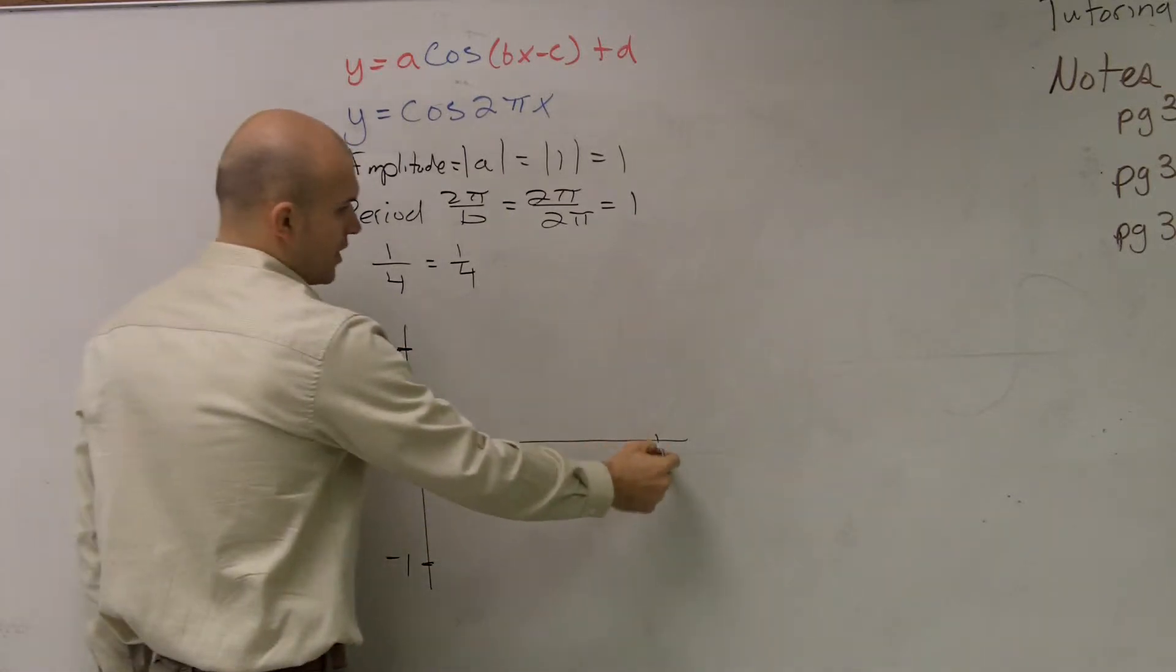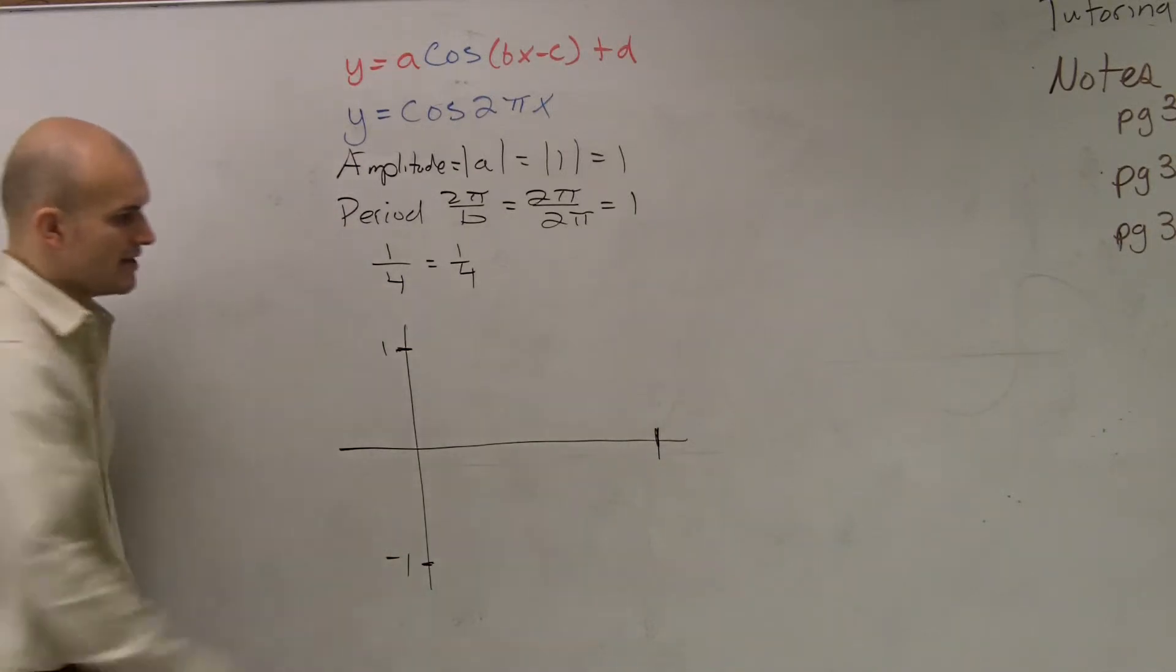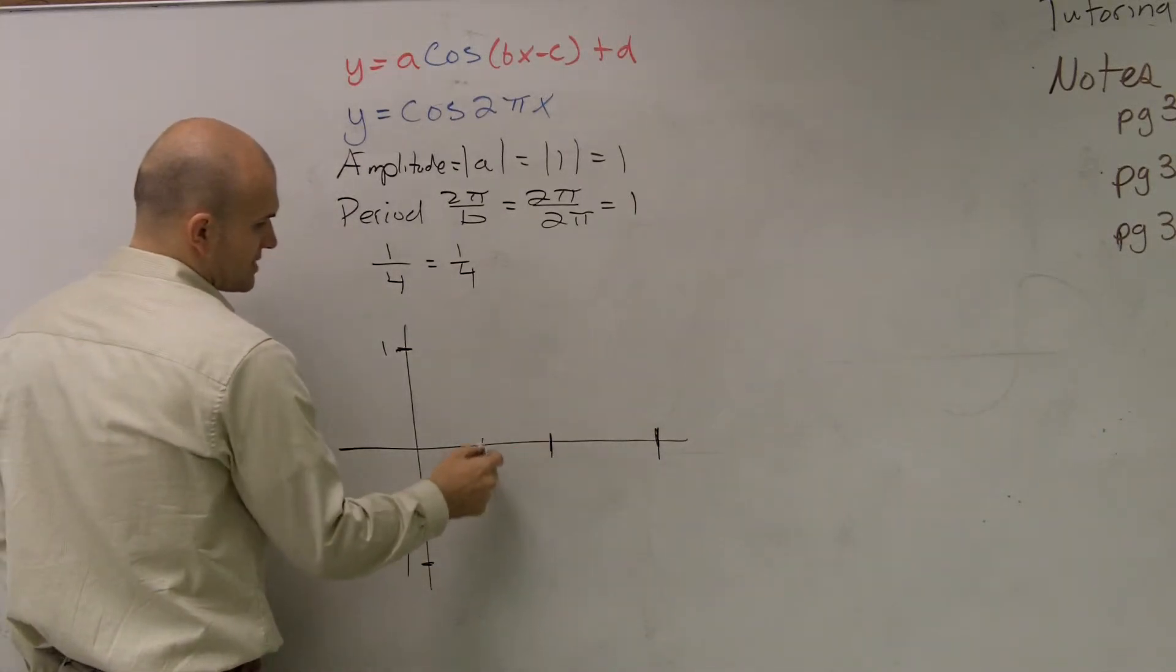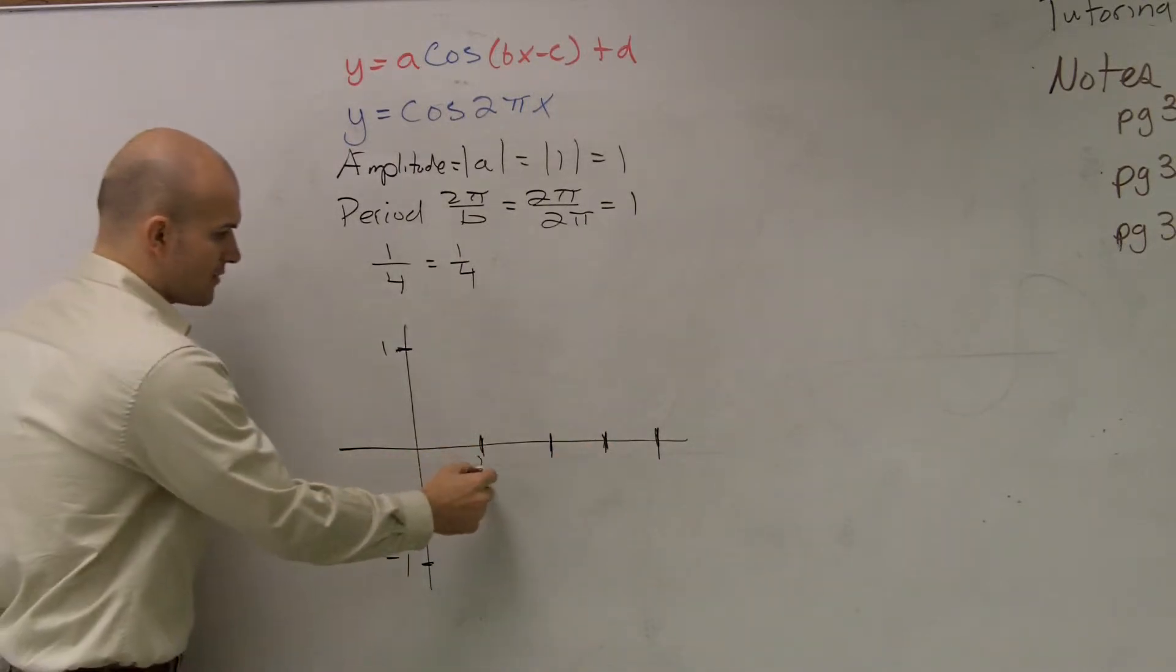It goes as far as 1, so it's going to go into 1, it's going to complete 1 cycle. Then we need to break it up into four important points. Well, the distance of our first important point is 1 fourth.